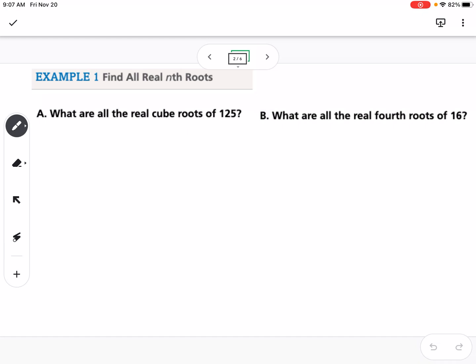Our first example is, what are all the real cube roots of 125? So what we're thinking of here is we're thinking of, what value is the cube root of 125? So another way of solving that, if we're trying to undo a cube root, is to cube both sides. So we could say x cubed equals 125.